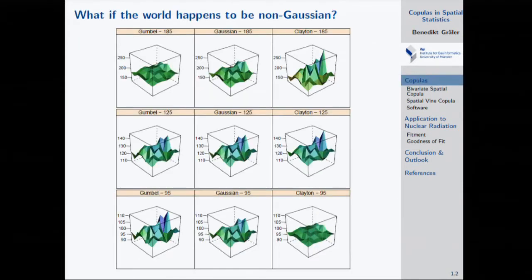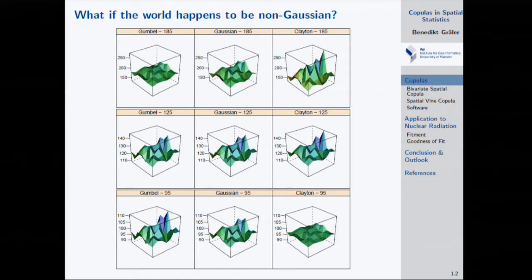The question is: what happens if the world is not non-Gaussian? All the approaches we've seen so far assume we can use a Gaussian random field — a Gaussian process — to capture our process. But the problem is this isn't always the case. So what are the options if we want to go beyond the Gaussian distribution?